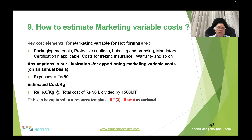Marketing variable costs for hot forging include packaging material, protective coating, labels and branding, mandatory security if applicable, freight, insurance, and warranty costs. Assuming ₹90 lakhs per year, cost per kg = ₹90 lakhs ÷ 1,500 metric tons = ₹6 per kg, shown in row 6 of resource template RT2.